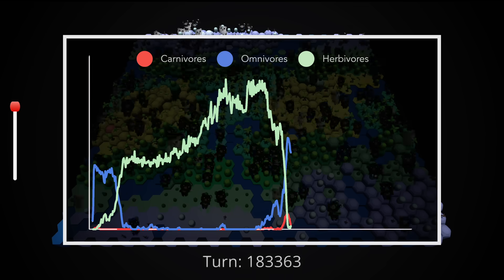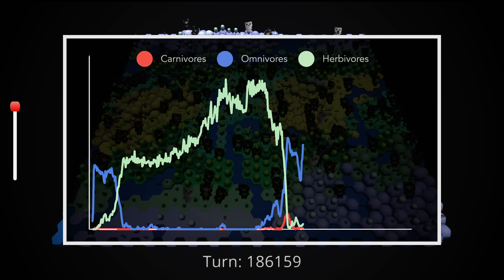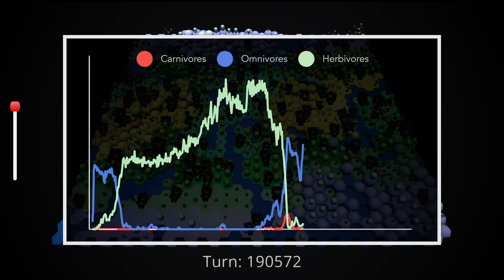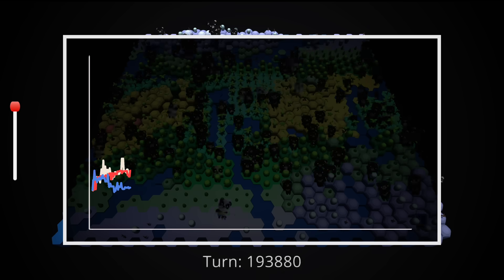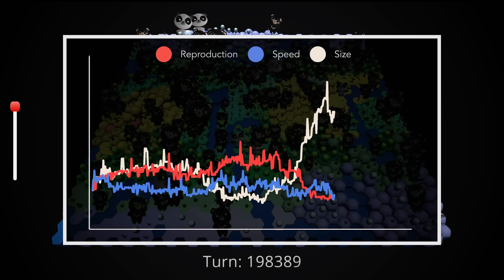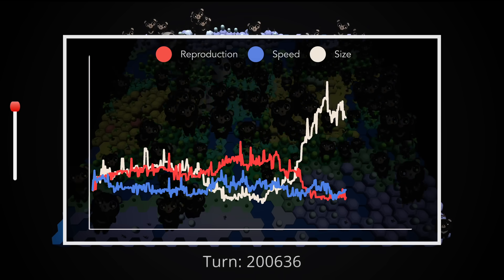The number of predatory creatures skyrockets over just 10,000 turns, causing the mass extinction of virtually every herbivorous creature on the map. These are primarily omnivores, but we see a sharp rise in specialist carnivores as well. The creatures enter into an evolutionary arms race which is defined almost entirely by size, which, if you remember, is the only defense against predation.